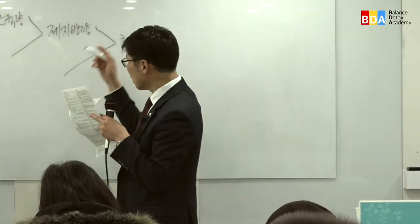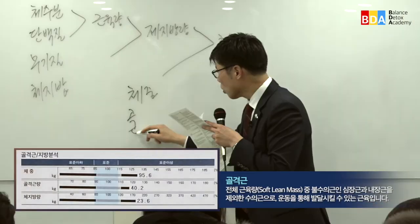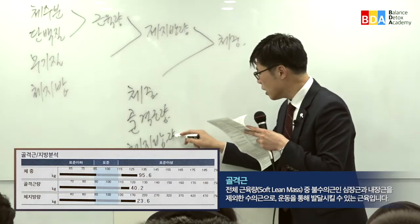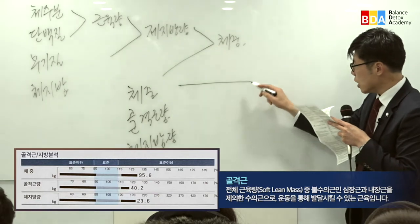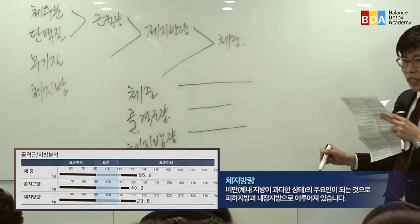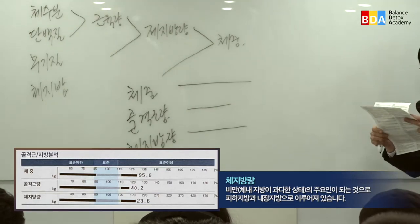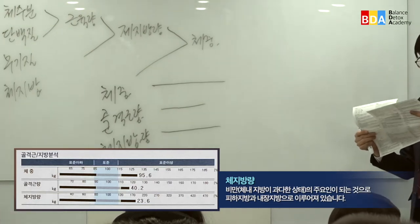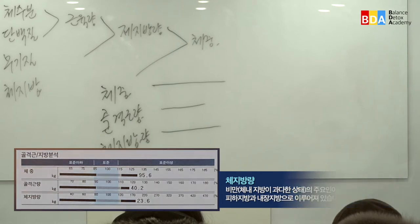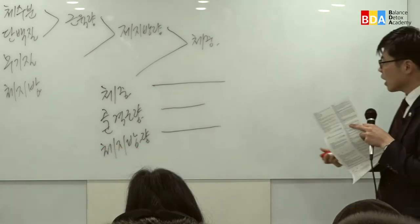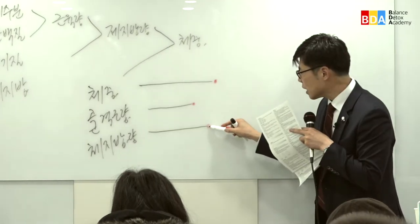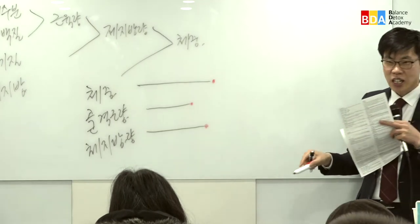여러분의 인바디 결과를 보시면 체중, 골격근량, 체지방량이 있습니다. 이것이 막대기로 표시되어 있고, 표준 범위에 들어가 있는 분도 계시고 표준 이상에 들어가 있는 분도 계실 겁니다. 체중의 끝점, 골격근량의 끝점, 체지방량의 끝점을 찍어서 이어보세요.